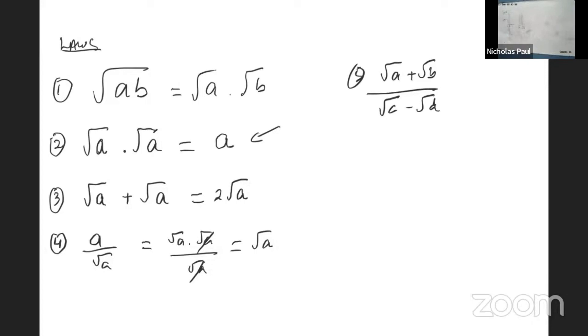Rationalize, good. How? Multiply by the conjugate of the denominator, right.